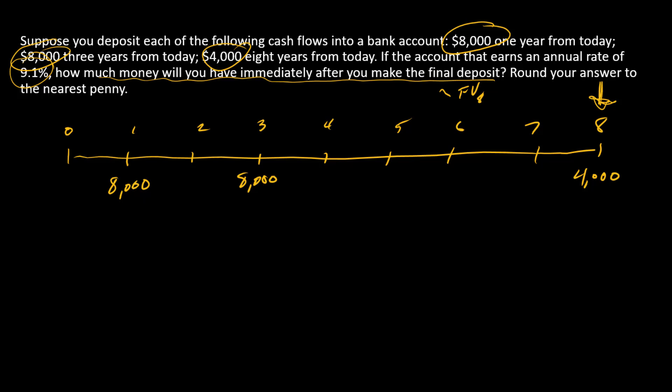Our rules for finding future values of a series of cash flows are: first, calculate the future value of each individual cash flow, and then second, we need to add.